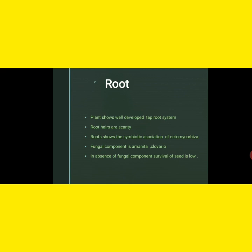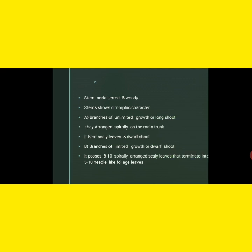In the absence of the fungal component, seed viability or survivability is very low. Next is the stem. The stem is aerial, erect, and woody. Aerial means it grows in the direction of the air and is very long in length. Erect means it does not collapse and grows in a straight direction. Woody means the stem contains mechanical tissue and is woody in nature — strong and cannot collapse under pressure. The stem shows a dimorphic character: there are two types of stems — branches of unlimited growth and branches of limited growth.